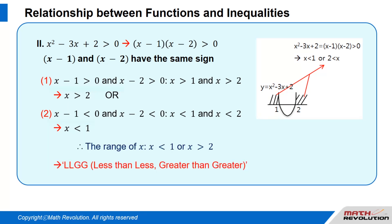Therefore, the range of x becomes x is smaller than 1 or x is greater than 2, which means LLGG — less than less, greater than greater — as shown by the figure above.